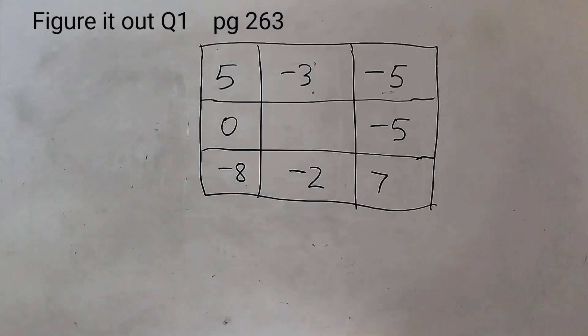We need to do the calculations for this grid and find the border sum. Border sum means we will add the top row, find the sum, bottom row, find the sum, left column, find the sum, and right column and find the sum. Let's get started.